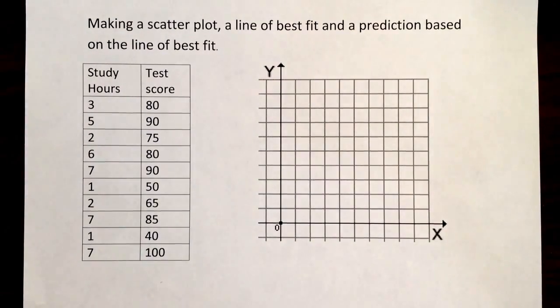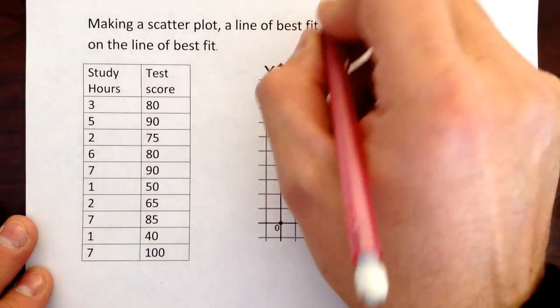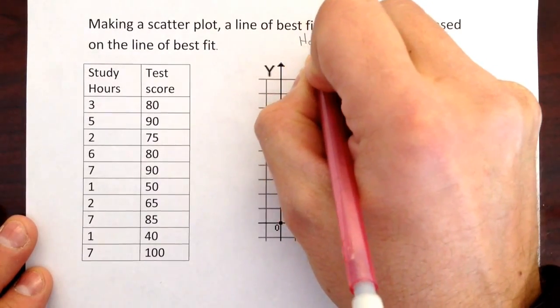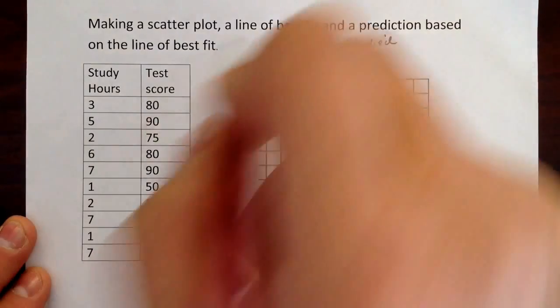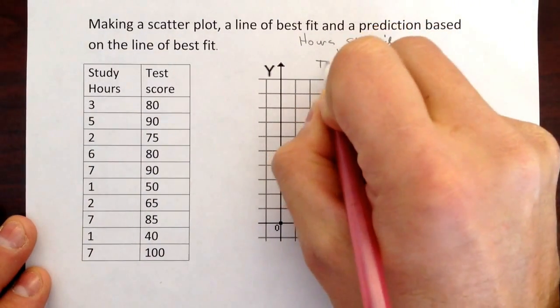So let's take a look at this and figure, let's come up with a title here. Title first is going to be, I'm going to make it hours studied versus test score.